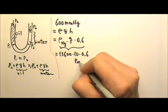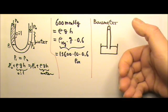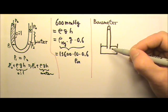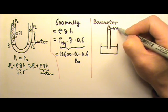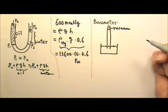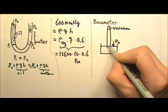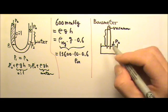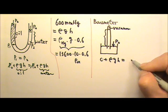For a barometer, we have a tub filled with a fluid and a glass tube filled with a fluid. We cover the top, flip it over, and place it in the tub. If the tube is long enough, the fluid goes down due to gravity and leaves a vacuum at the top. When the fluid stops going down and is balanced, the pressure at the bottom inside and outside must be the same. The atmospheric pressure equals the pressure of the vacuum plus rho*g*h of the fluid column. Since the vacuum pressure is zero, rho*g*h of the column equals atmospheric pressure P₀.